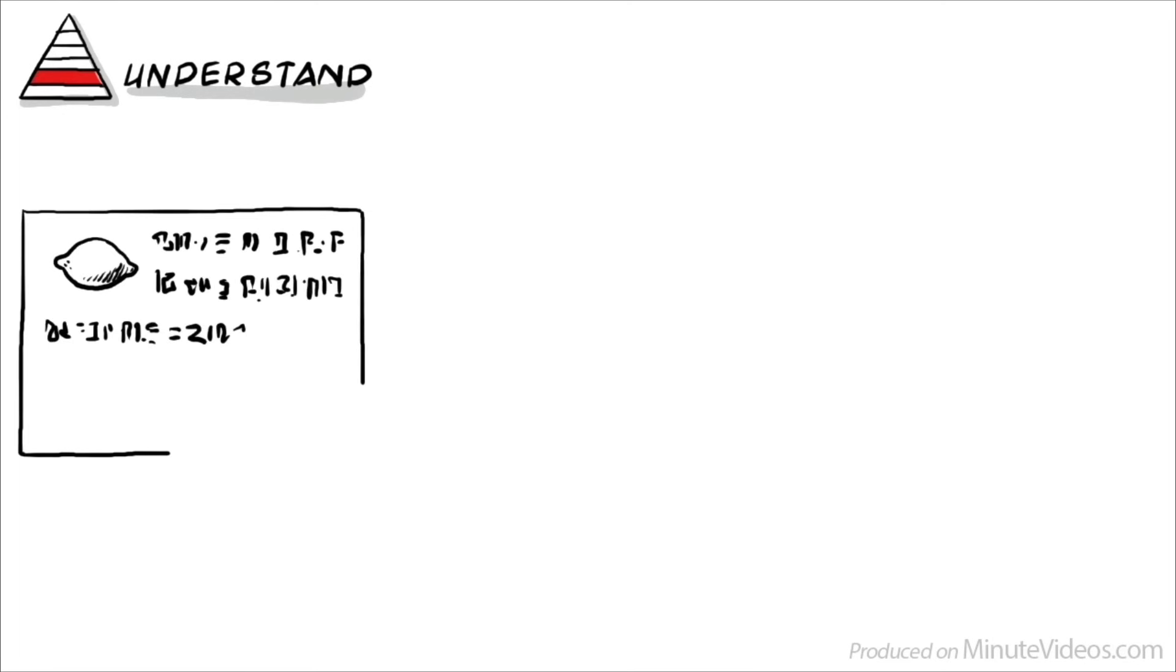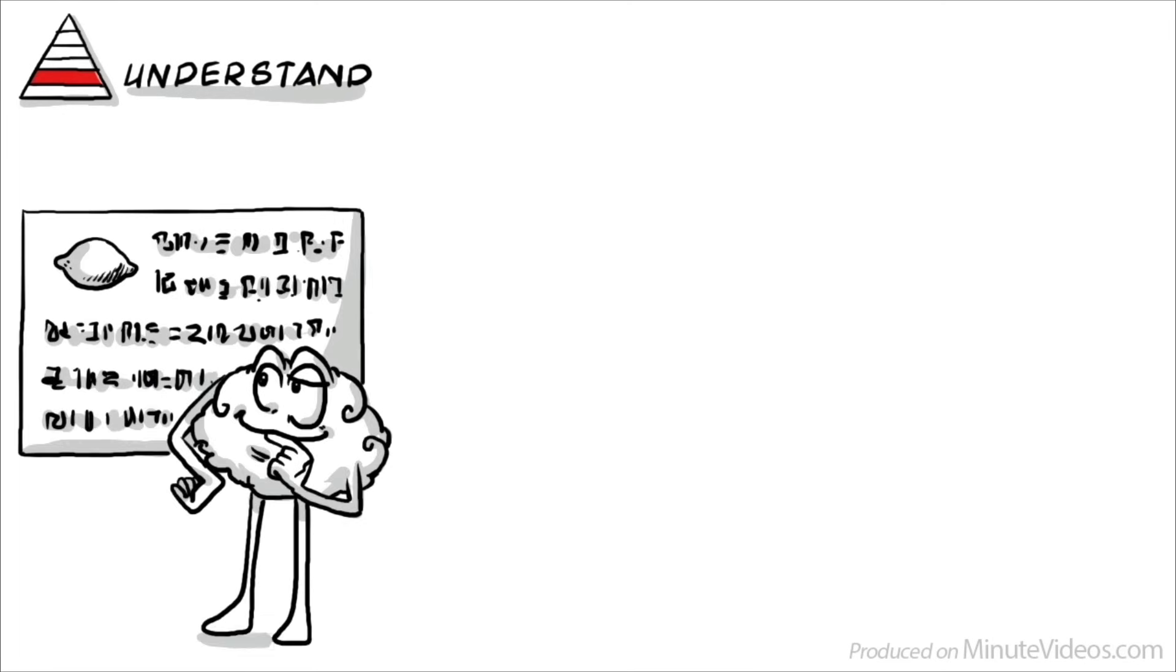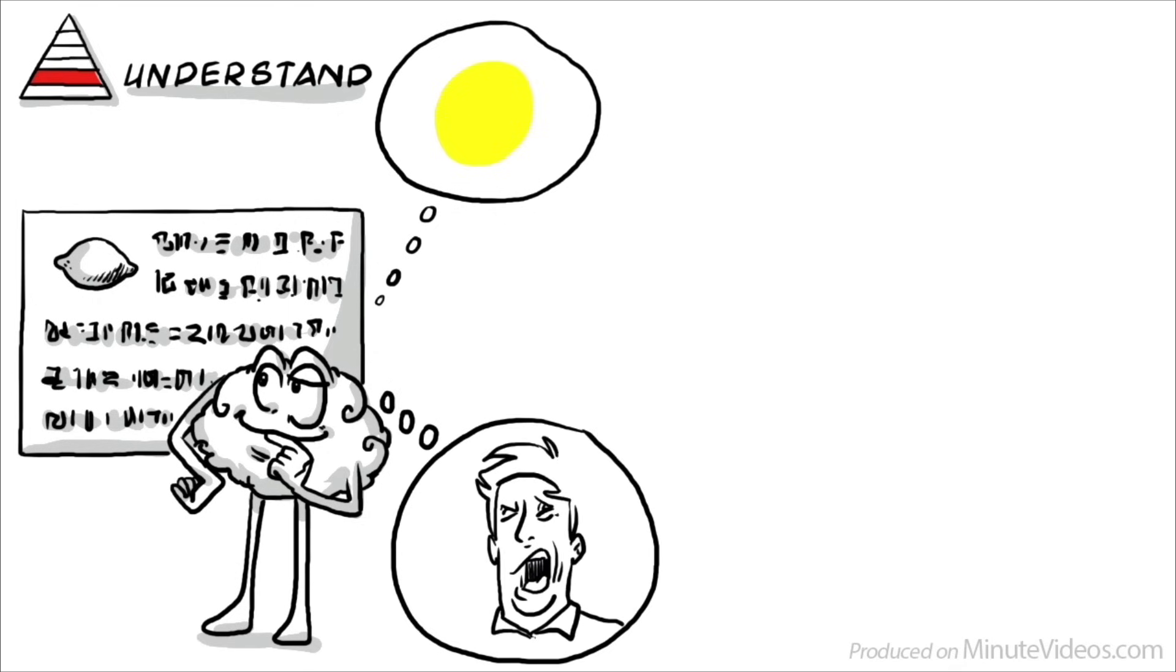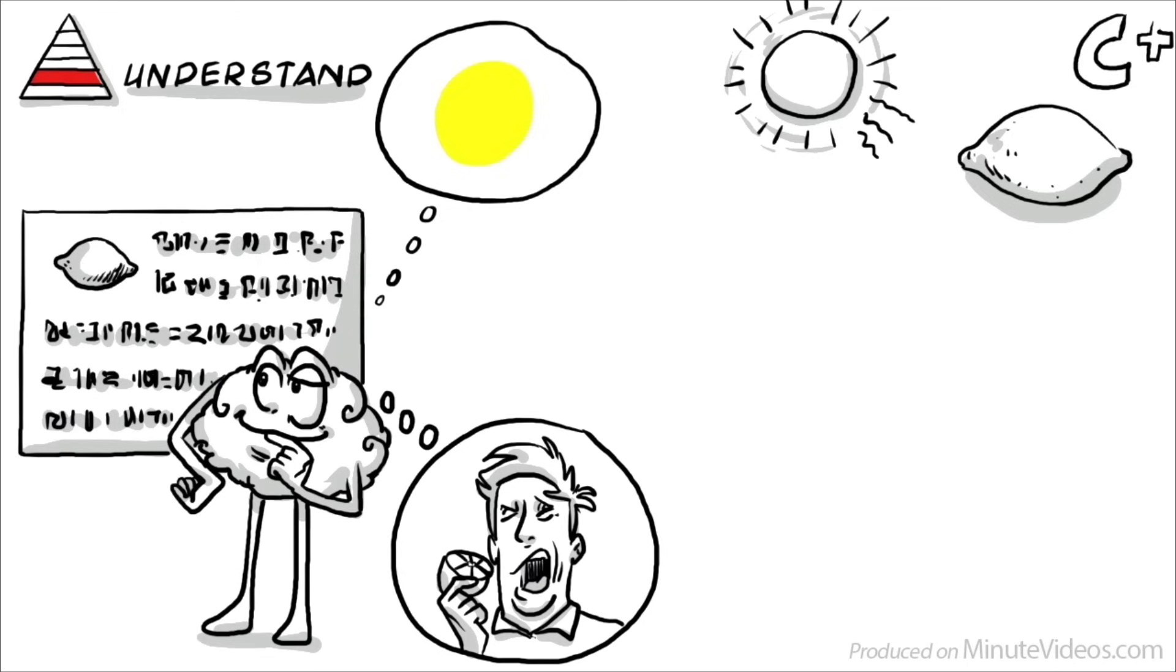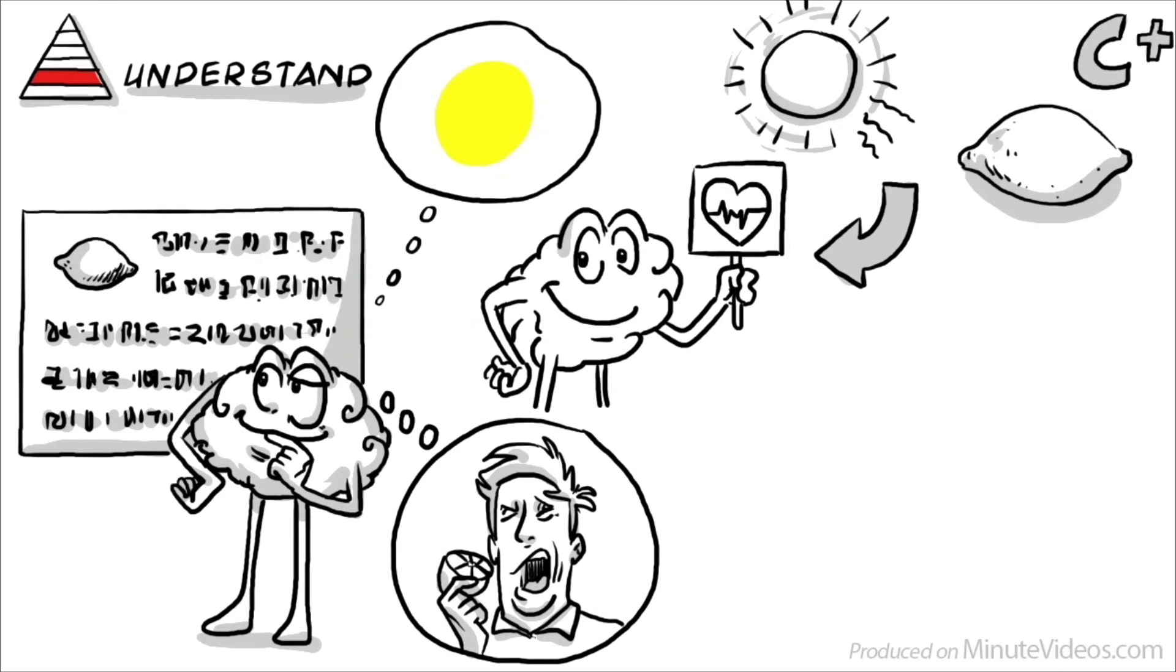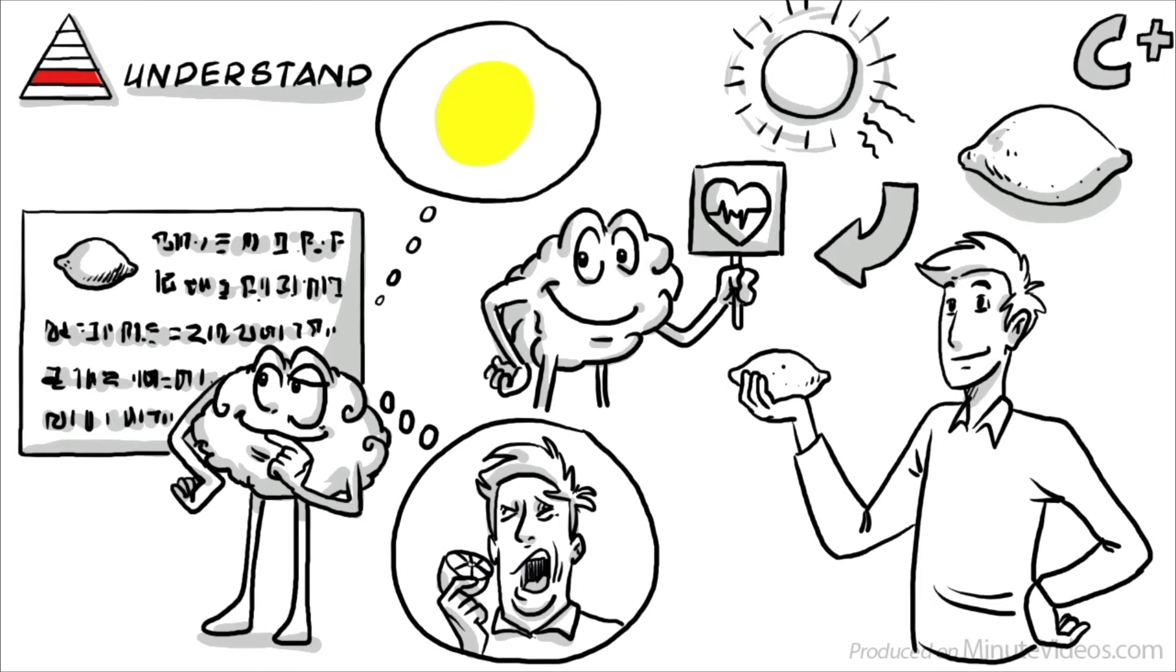On level 2, we learn to understand. We begin to decode information and learn that a lemon is yellow when it's ripe to eat, and if we take a bite, that it's really super sour. We also understand that lemons love sunshine and that they contain lots of vitamin C, which is a great natural antioxidant that keeps us healthy. Now, as we really understand a lemon, we can work with it.